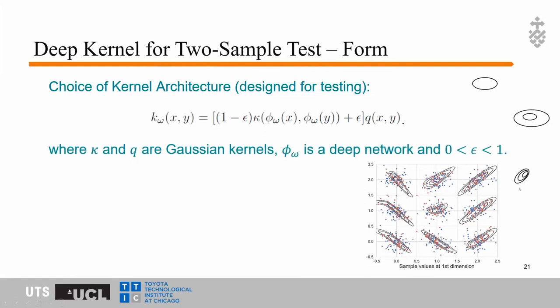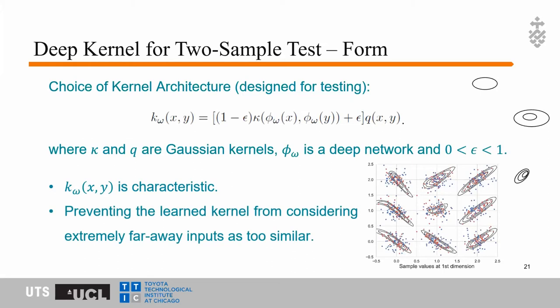To make the deep kernel characteristic and avoid the strange contour behavior, we design a kernel with an epsilon term. The epsilon term ensures our kernel is a characteristic kernel, and the base kernel itself helps prevent the learned kernel from considering extremely far-away inputs as too similar. Using this kind of deep kernel, the strange contour behavior disappears.